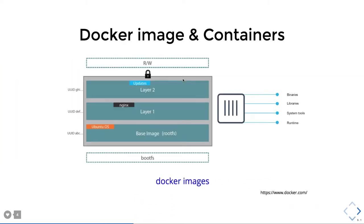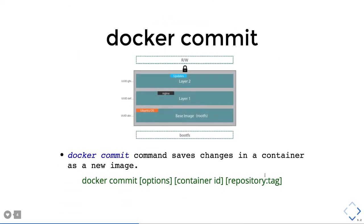A Docker image has a layered architecture. It has a boot filesystem (bootfs), then a base image which is a Linux distribution like Ubuntu, and then additional layers are created on top based on what you execute. Docker Hub is like GitHub — you pull images, make changes, do a commit, and run 'docker push' to create a new image in your account.